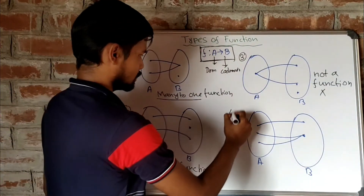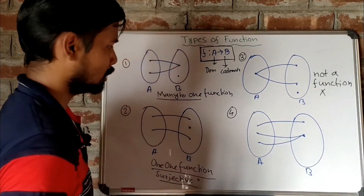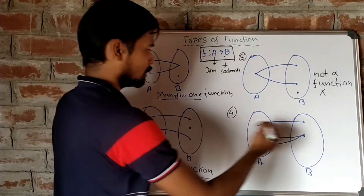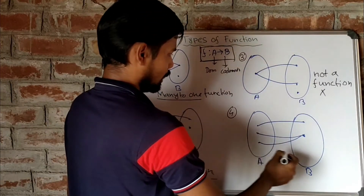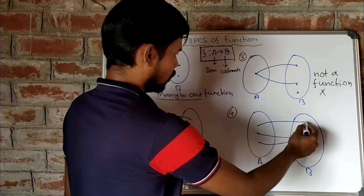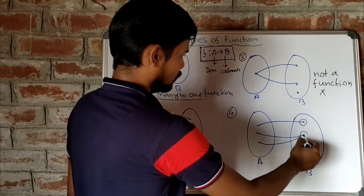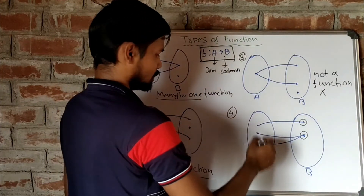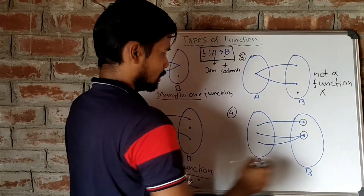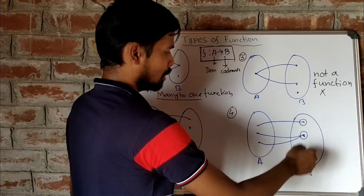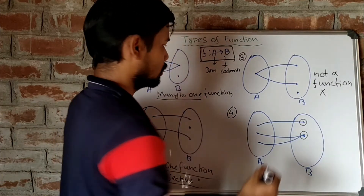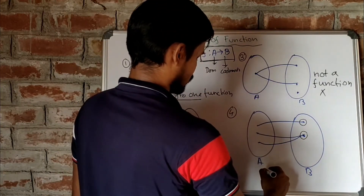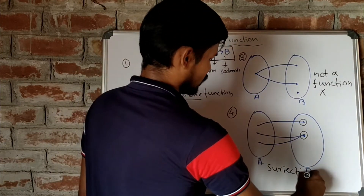For the fourth case, there are three elements in the domain set and two elements in the codomain set. All the elements of the codomain set have pre-images in the domain set — there is no element left in the codomain set. So this type of function is known as a surjective function.